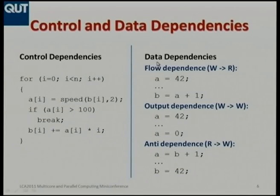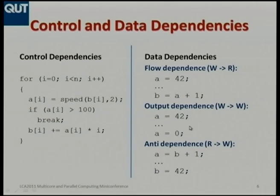For data dependencies — or flow dependencies — we have some statement that writes a value and then later some instruction which reads it. We need to preserve that order, otherwise we won't be reading the correct value. That's referred to as a flow dependence. We similarly have output dependencies and anti-dependencies, which result from a write followed by another write needing to be kept in the same order, or reading some old value before it gets overwritten. We need to preserve those ordering constraints, otherwise we might get a different result. If we preserve all these dependencies, we are guaranteed to produce the same result.